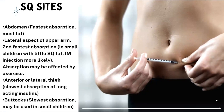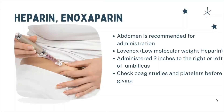The anterior or lateral thigh gives a slower absorption and is used for long-acting insulin such as Lantus. The buttocks is your slowest absorption site, but it can be used in smaller children. Heparin or enoxaparin is an anticoagulant or blood thinner, and the abdomen is the recommended spot for administration. Lovenox is low molecular weight heparin, administered two inches to the left or right of the umbilicus. Before administering these medications, it's important to check your coagulation studies as well as platelets.